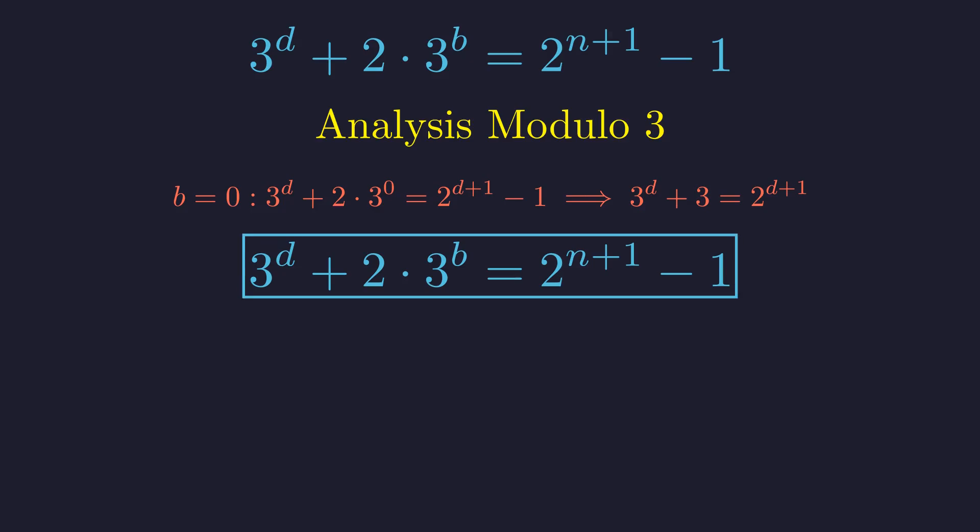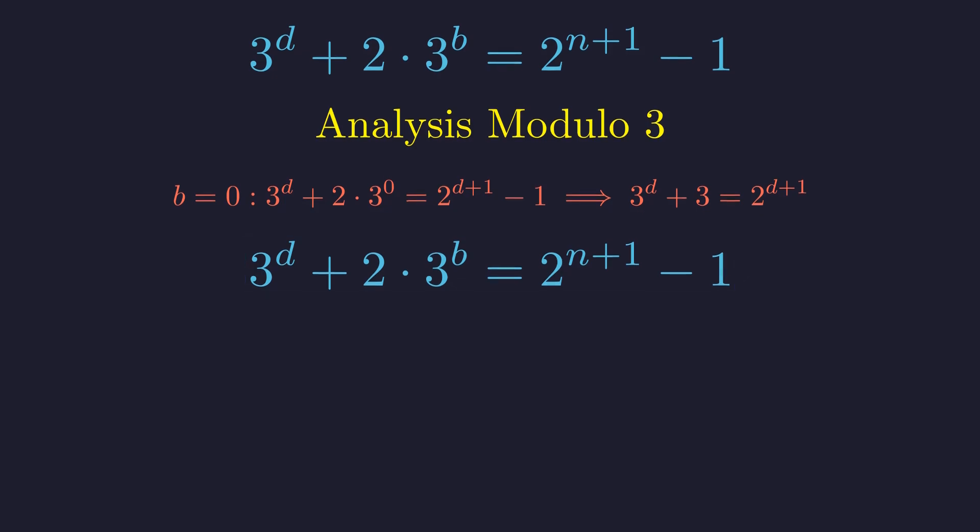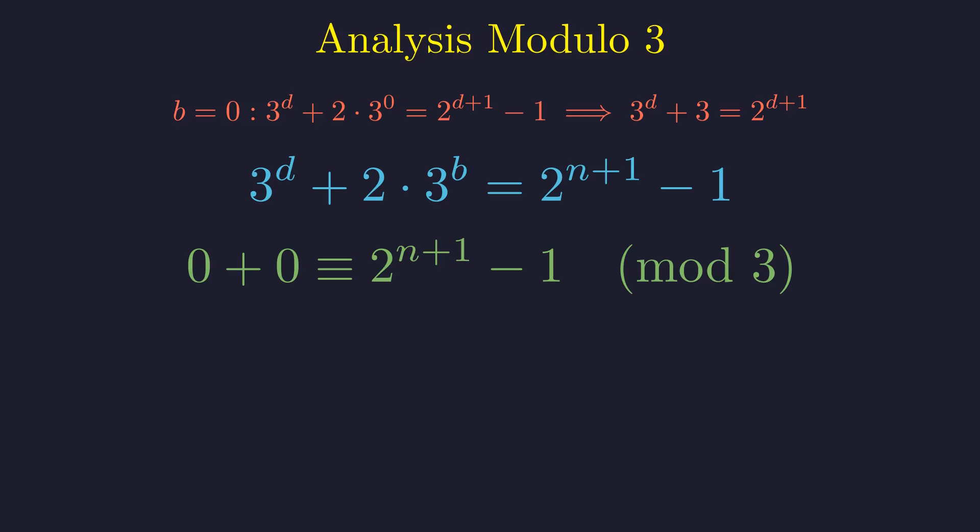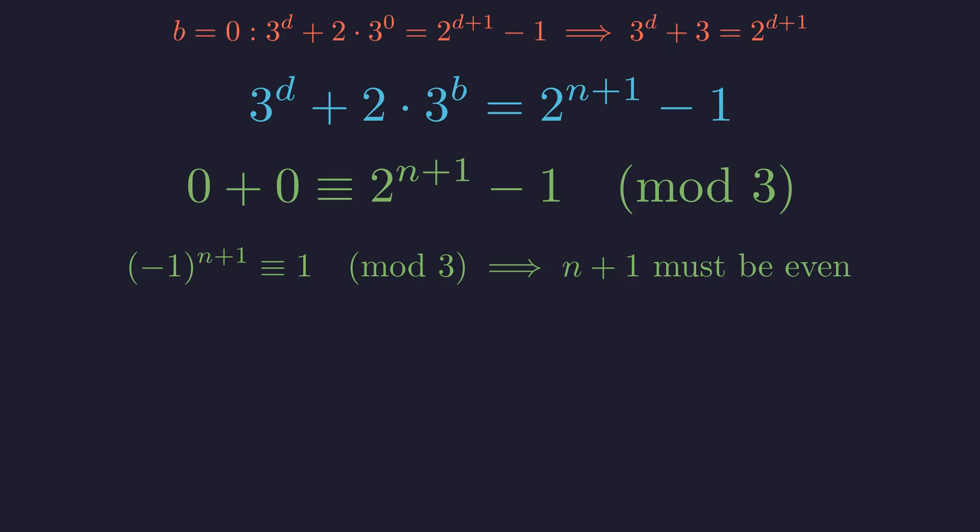This key insight allows us to analyze the equation using its remainders when divided by 3. Assuming b and d are at least 1, both of these terms are perfectly divisible by 3, so their remainder is 0. The equation simplifies dramatically. Rearranging gives us 2 to the n plus 1 must have a remainder of 1 when divided by 3. Since 2 is negative 1 modulo 3, this means the exponent n plus 1 must be an even number. This is a powerful constraint. This constraint forces n to be odd. We have already confirmed the solution at n equals 3. A check of subsequent odd values for n reveals no further solutions, as the right-hand side of the equation quickly outgrows the left. Consequently, n equals 3 is the only solution in this scenario.